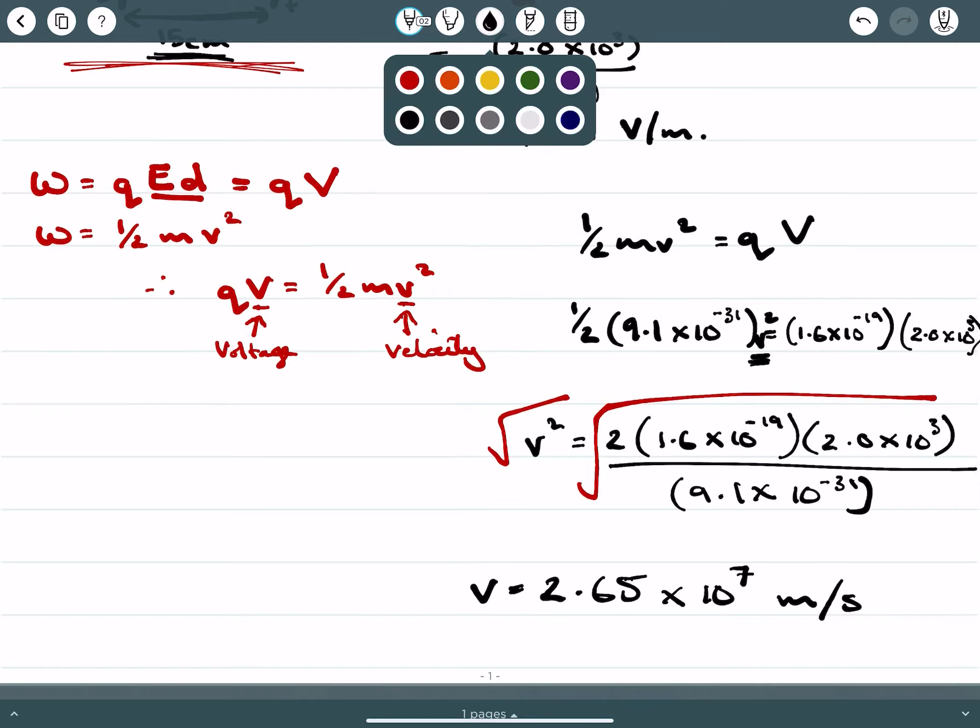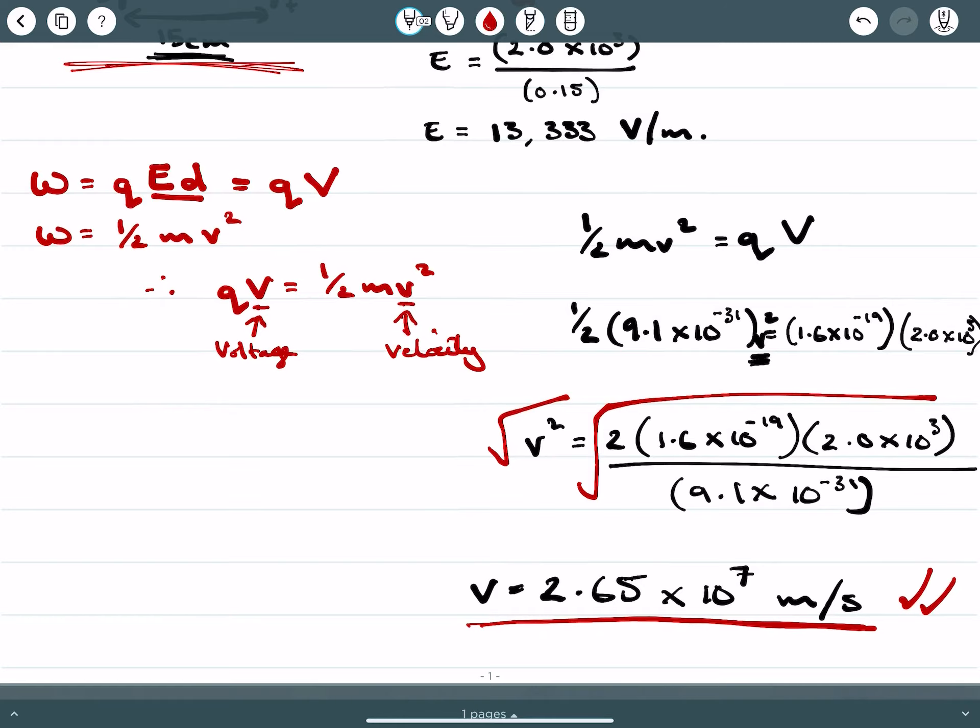And the question is, is this a valid answer? Well, think about this. This is less than the speed of light. It's still very fast. It's a significant portion of the speed of light. But electrons are very small. They're very light. They move generally at these speeds. So I think this is a fair assessment or a valid answer of the question.